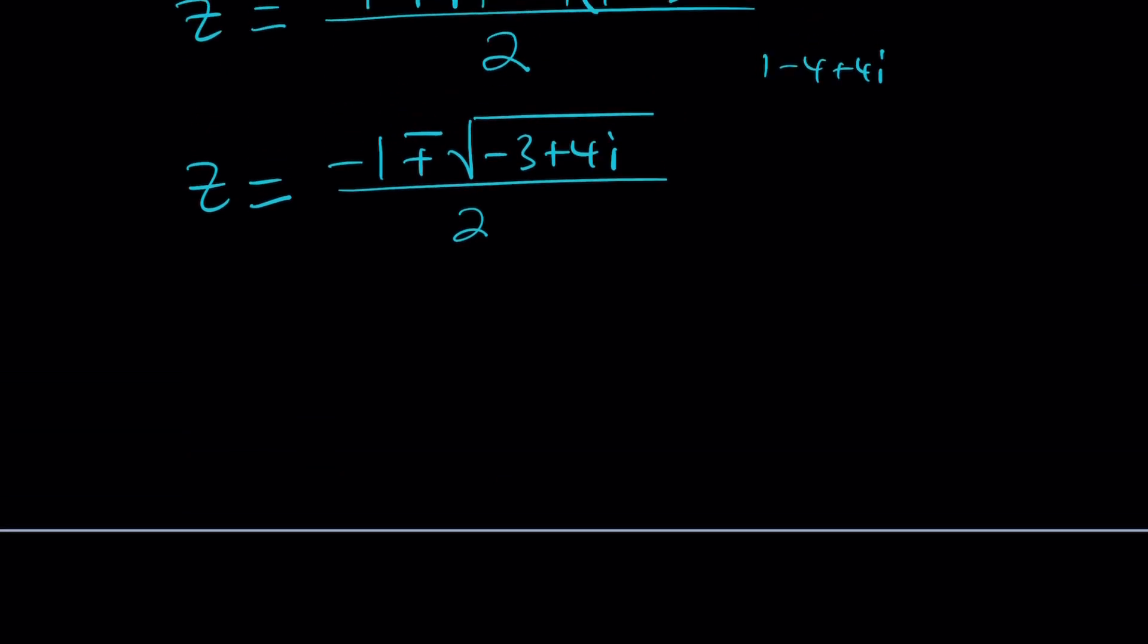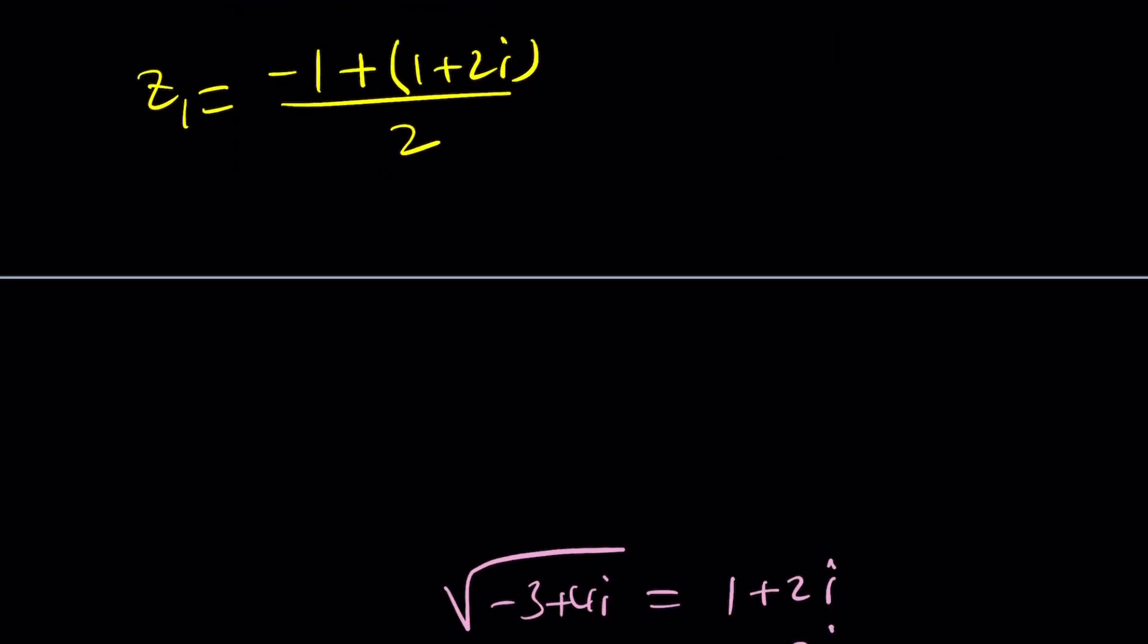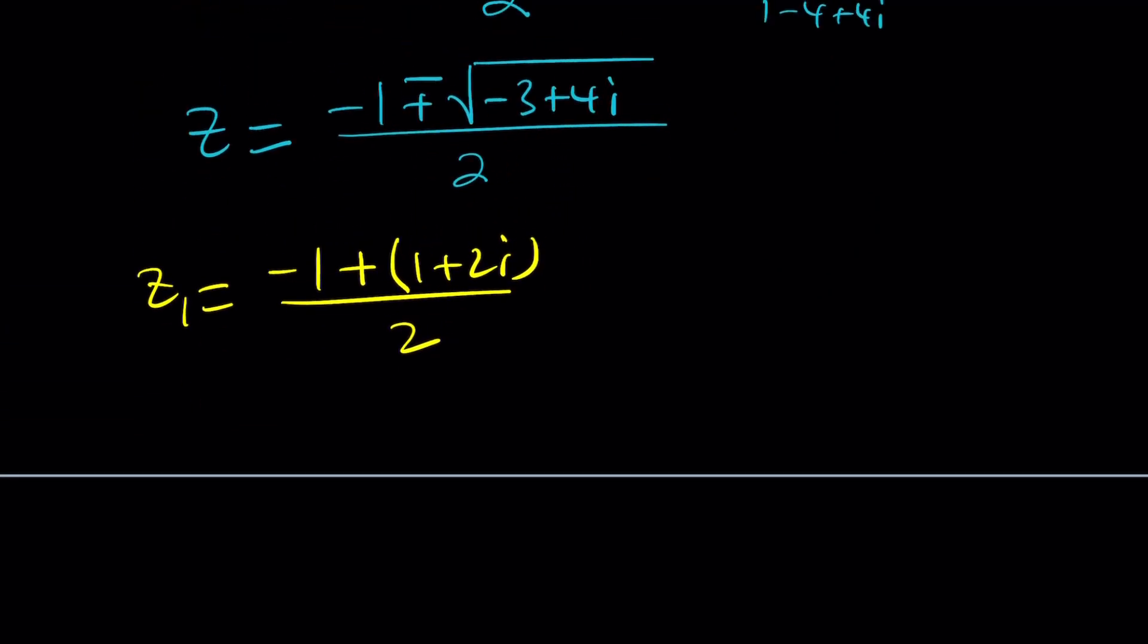So, let's go ahead and go with the 1 plus 2i, z sub 1, negative 1 plus - by the way, the plus minus sign will be taken care of by the roots, because one of them is the opposite of the other. Let's just go ahead and keep everything plus. So, we could use 1 plus 2i first, divided by 2, and then this should give me, when the negative 1 and the positive 1 cancel out, this should give me i. So, that's one of the solutions.